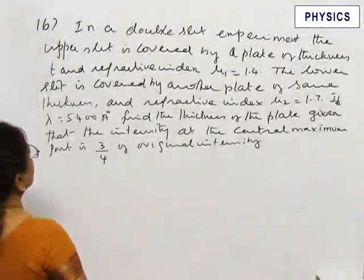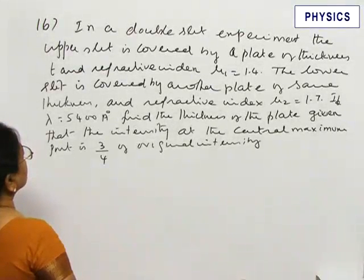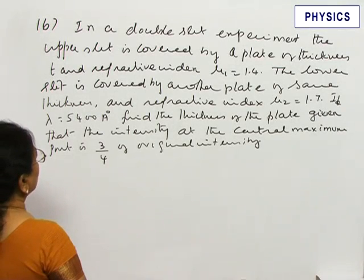Question 16. In a double slit experiment, the upper slit is covered by a plate of thickness T and refractive index μ₁.